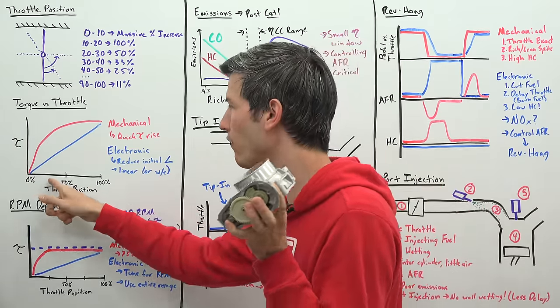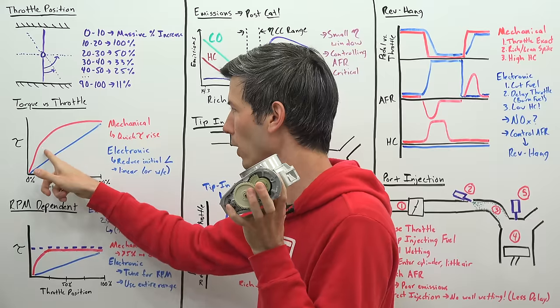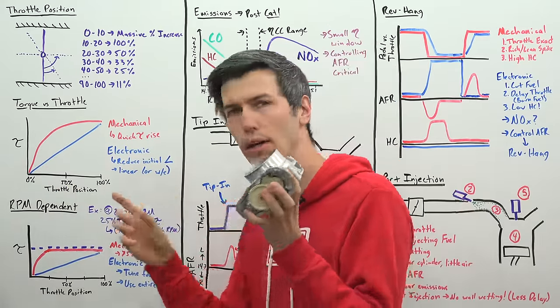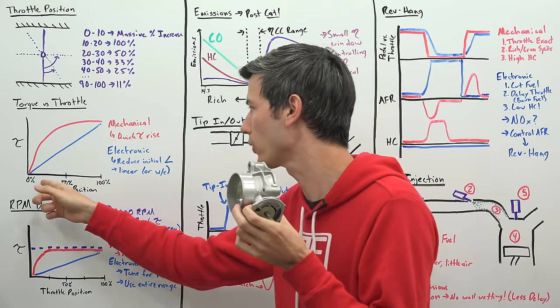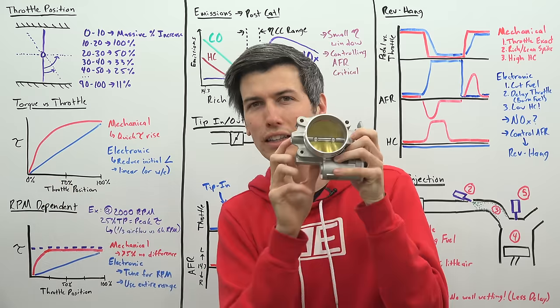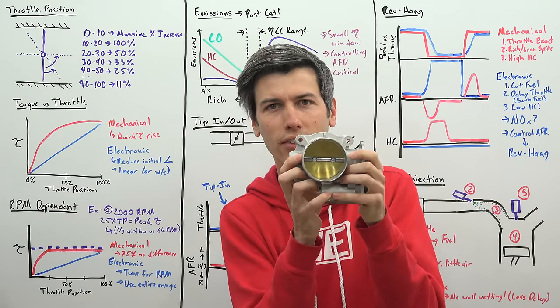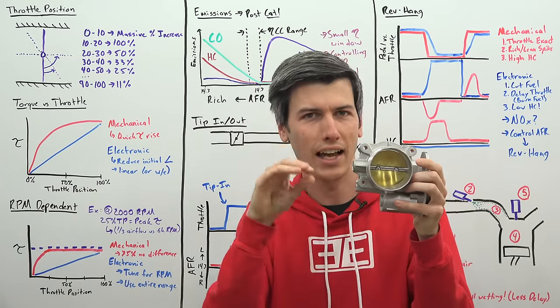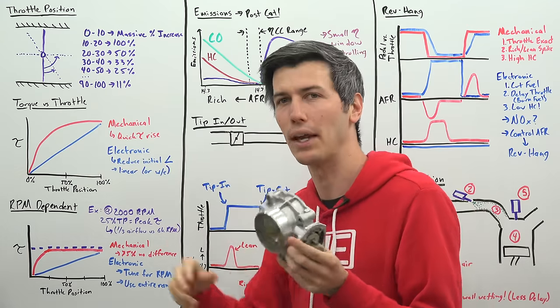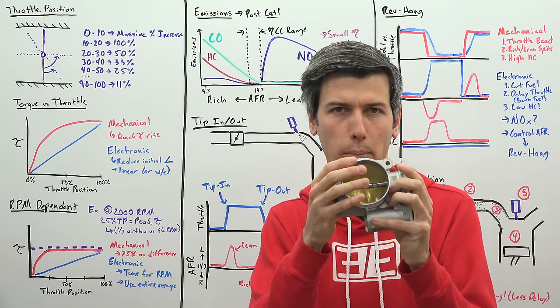And so if you give it 25% throttle with a mechanical throttle, you might get 50% of your torque. Versus with an electronic throttle, it'll say okay, well they want 25% of their torque because they put the throttle position down to 25%. So it's going to limit how much it actually opens up this throttle valve. So you get exactly 25% torque rather than whatever that mechanically would be based on how much you press the accelerator pedal.